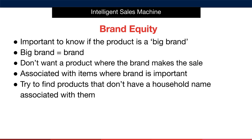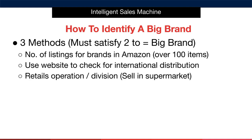For example, think of Apple products. They're so well known that the fact it's an Apple product will sway a customer towards purchasing that brand, even if there are lower cost alternatives available. Not every customer will be swayed, but we don't want to be competing directly with a company of this magnitude, so we want to avoid products that have a household name associated with them. Does this alone rule a product in or out? No — we simply log it as a big brand and move on. There are three methods to help you identify a big brand, and if two or more are satisfied, we'll mark the item as a big brand.